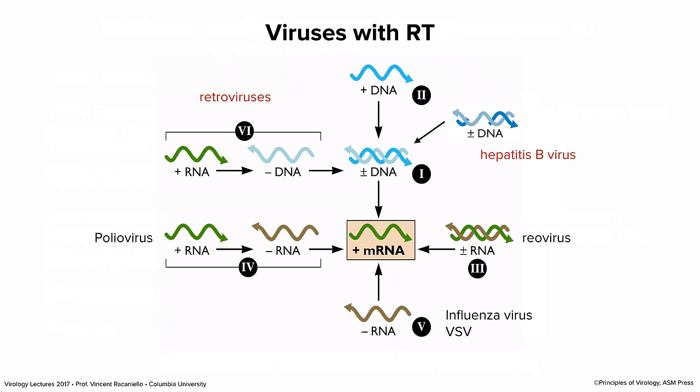Here are the viruses that have reverse transcriptase as part of their replication cycles. It's not just retroviruses — as group six, they have plus RNA in their genomes and carry reverse transcriptase to convert RNA to DNA. There are also hepatitis B viruses, which have a gapped DNA genome yet have reverse transcriptase as part of their replication cycle. Today we're going to explore retroviruses and hepatitis B viruses, and you will finally learn how that genome is gapped and has an RNA and a protein attached to it.